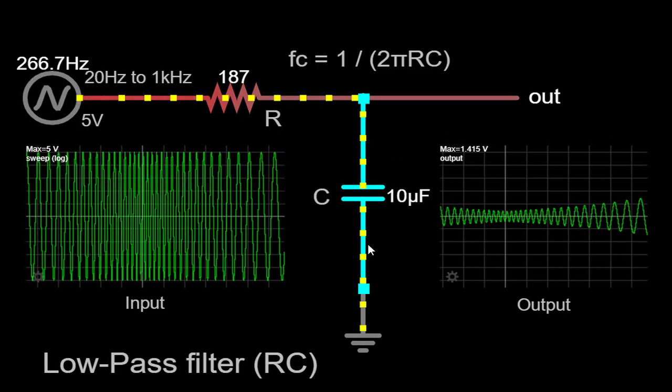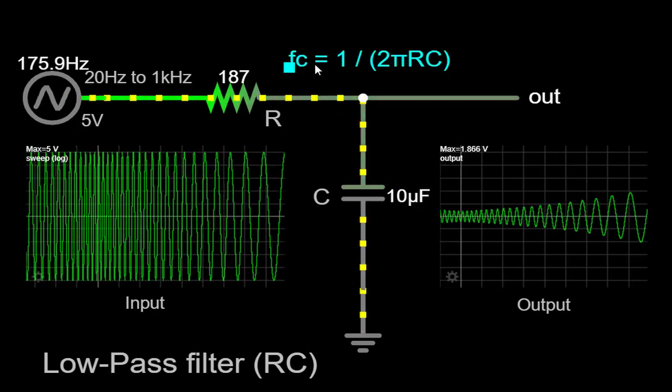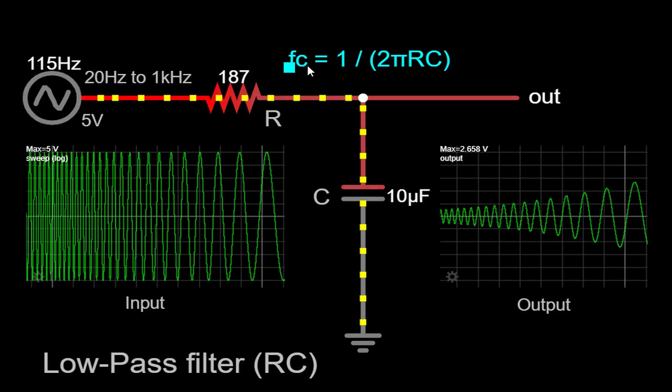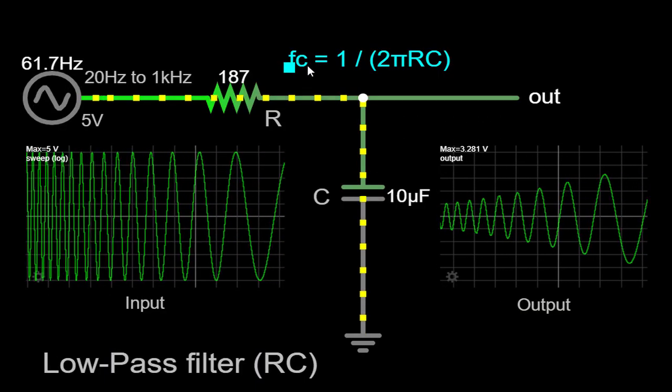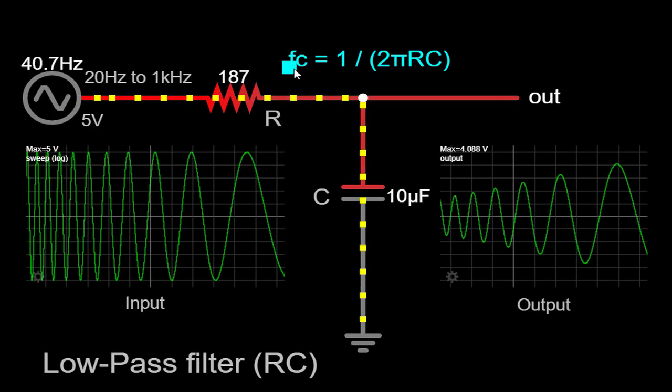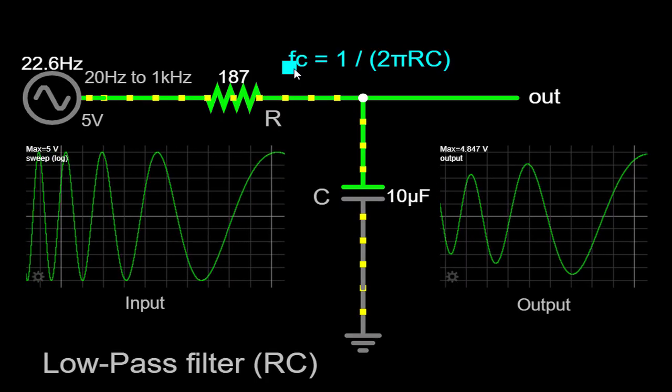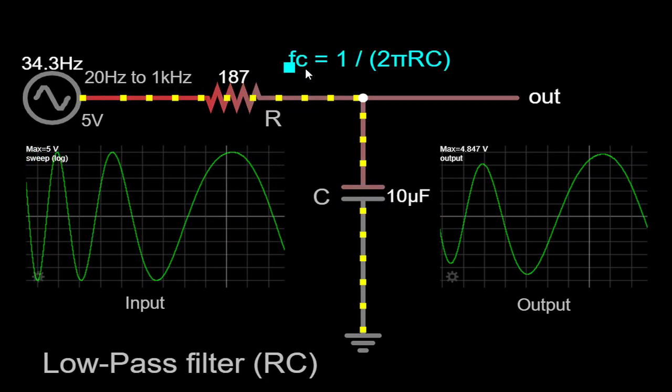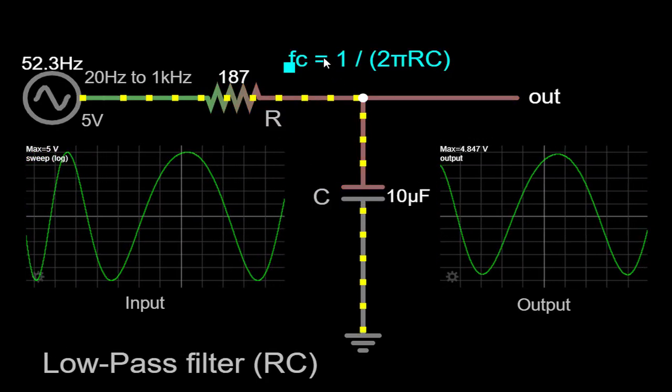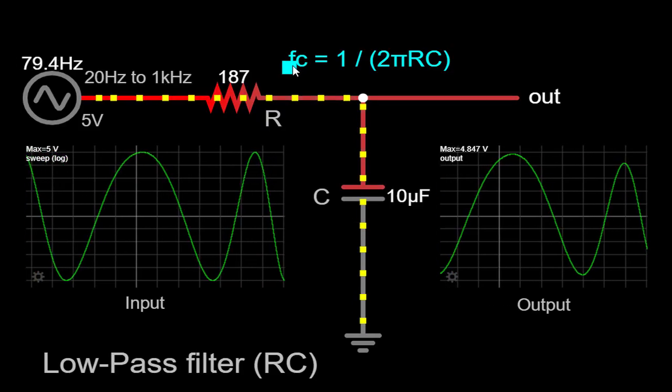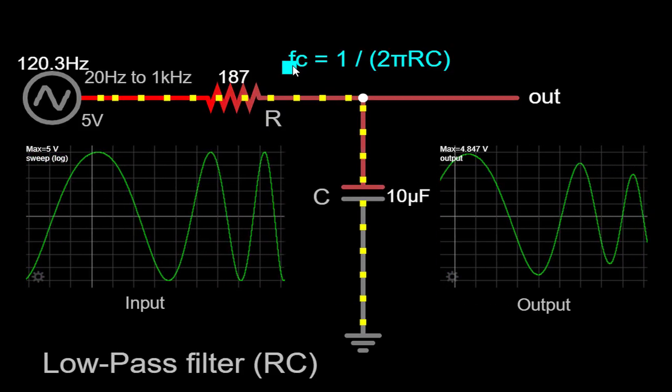The cutoff frequency FC of an RC low-pass filter is the frequency at which the output signal amplitude drops to approximately 70.7% (1 by under root 2) of the input signal amplitude. The cutoff frequency is determined by the values of the resistor and capacitor and can be calculated using the formula FC equals 1 by 2πRC.